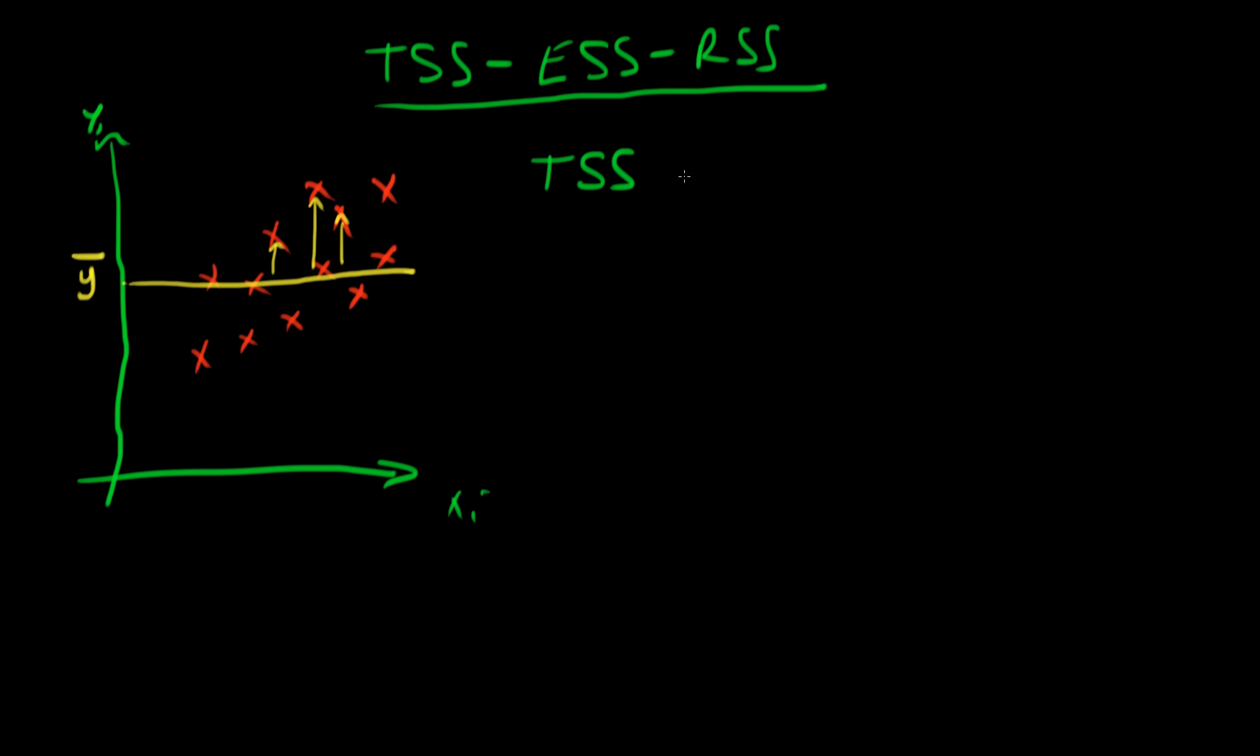Because we're going to consider some points which are actually below the line, instead of just summing the distances, we're actually going to sum the square of the distances. So that's the sum from i equals 1 to n of yi minus y bar all squared.